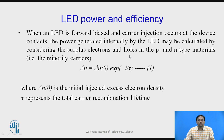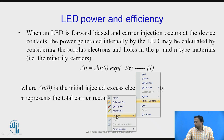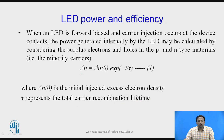There should be a greater number of electrons at the E2 state in the conduction band, so that while coming down we can allow one more photon to enable laser action, or emit energy as spontaneous emission. The excess electrons for spontaneous emission are calculated by: Δn = Δn₀ · exp(−t/τ), where Δn₀ is the initial injected excess electron density and τ represents the total carrier recombination lifetime.